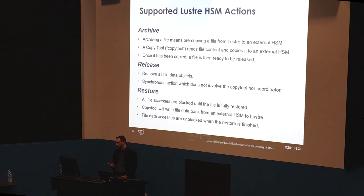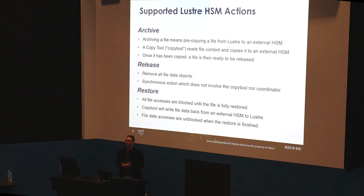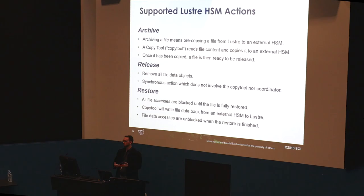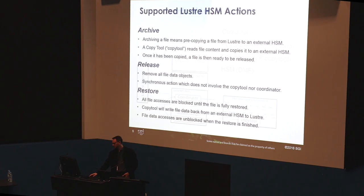The three main actions from Lustre HSM are the ability to archive, release, and restore. Archiving is copying the data from the Lustre file system into longer tiers of storage, whether tape, MAID-based technology, spinning disks that can power down, or even cloud-based storage. We can release the data blocks within the Lustre file system, and when we need those data blocks back in the high-performance file system, we can restore them — either automatically when users access the data, or manually as a batch recall.